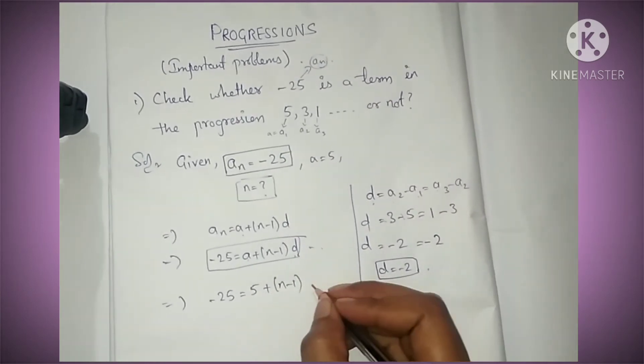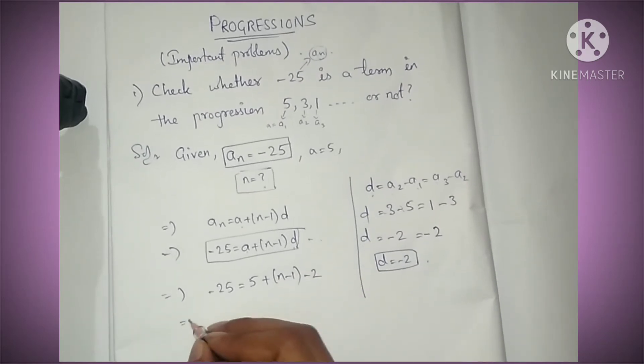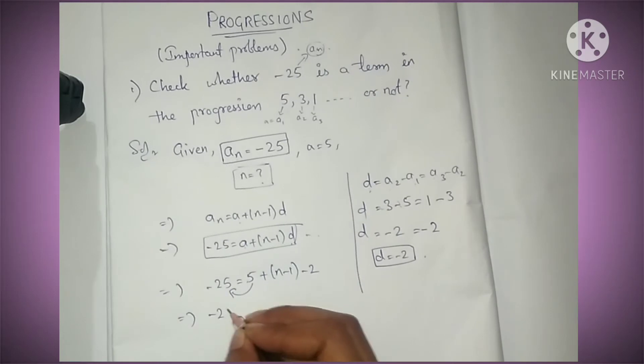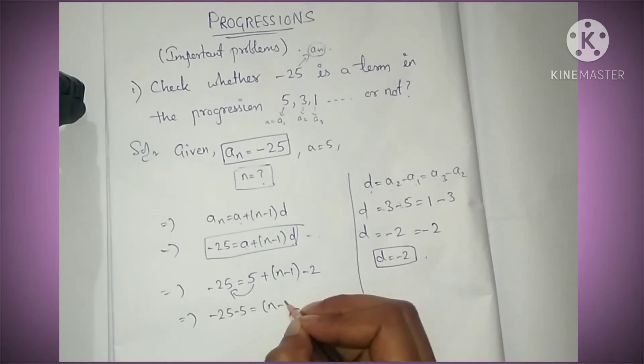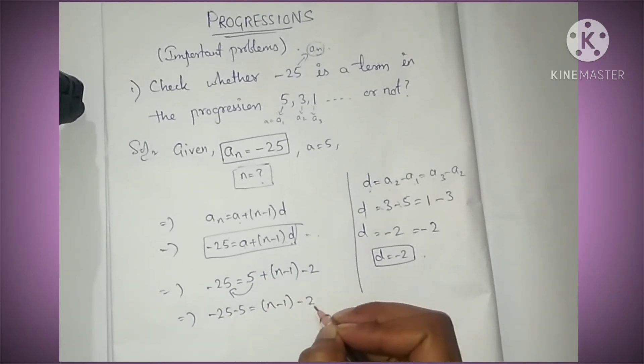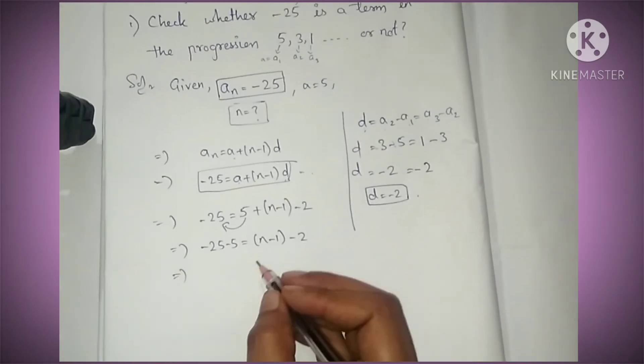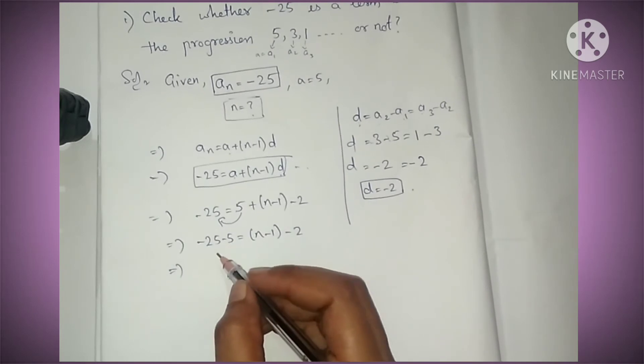Now taking numbers to one side, this plus becomes minus: -25 - 5 = (n-1)(-2). Minus into minus is plus, so -25 - 5.